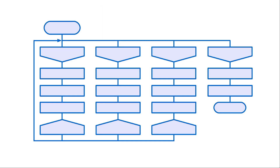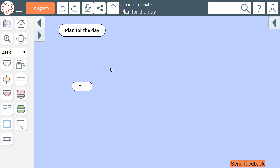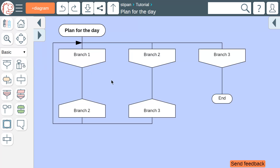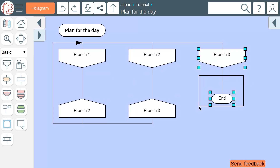DRACON allows us to split up a diagram into its logical parts. This can be accomplished by using a silhouette. In order to turn a diagram into a silhouette, click this button in the toolbox. A silhouette consists of several small diagrams tied together, called the branches of the silhouette.